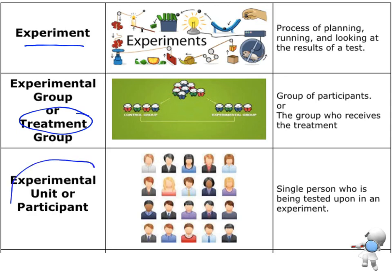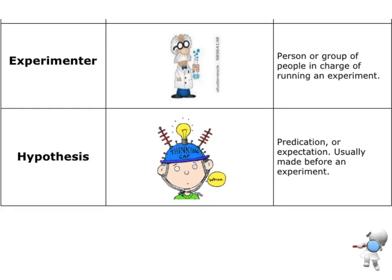My experimental unit, or my participant, is the person. An experimental unit is one person — one person involved in this experiment. The experimenter is the person in charge, the one actually carrying out the experiment. Sometimes the experimenter will be your teacher, because they'll be in charge of it. When it comes to the assessment, you will be in charge of it — you will be the experimenter.